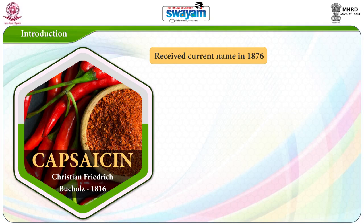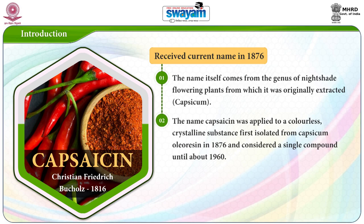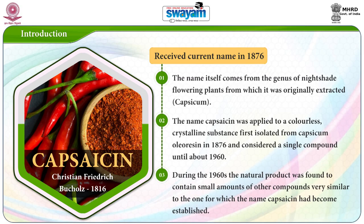Capsaicin was discovered and extracted by Christian Friedrich Bucholz in 1816, just two short years before his death. It received its current name in 1876, though Bucholz originally called it Capsicin. The name itself comes from the genus of nightshade flowering plants from which it was originally extracted. The name Capsaicin was applied to a colourless crystalline substance, first isolated from capsicum oleoresin in 1876 and considered a single compound until about 1960. During the 1960s, the natural product was found to contain small amounts of other compounds very similar to the one for which the name Capsaicin had become established.